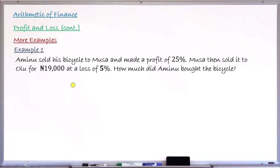To begin the lesson, let us take examples starting with the very first one. Example one says: Aminu sold his bicycle to Musa at a profit of 25%. Musa then sold it to Olu for 19,000 Naira at a loss of 5%. The question asks: how much did Aminu pay for the bicycle?